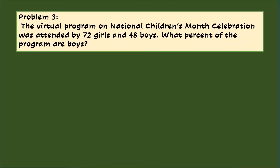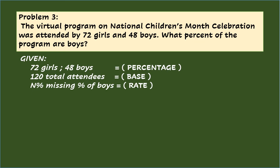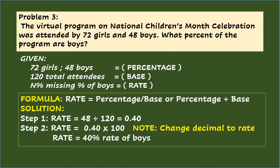Problem 3: The virtual program on National Children's Month celebration was attended by 72 girls and 48 boys. Given in the problem are 72 girls and 48 boys, which are both percentage; 120, which is the total attendees, is the base; and N percent, the missing percent of boys, will be the rate. Using the PRB triangle, the formula for finding the rate is rate equals percentage over base, or percentage divided by base. Step 1: rate equals 48 divided by 120 equals 0.40.